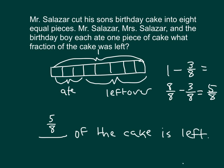Let's think whether or not that's reasonable. We have 5 eighths of the cake left. We started with a whole cake, so that does make sense — we can't have more cake than we started with because 3 people actually ate some of it. They ate 1 piece or 1 eighth of the cake each. So again, as we're going through these problems, look to see whether your answers are reasonable.